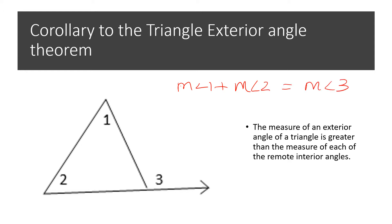So that was the original. The corollary says the measure of an exterior angle of a triangle is greater than the measure of each of the remote interior angles.